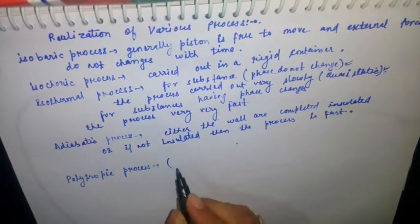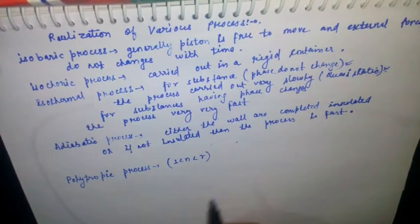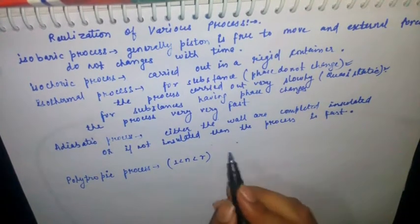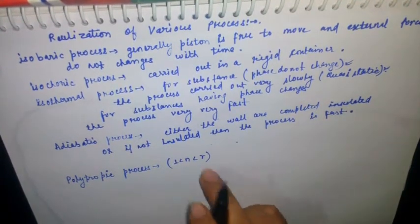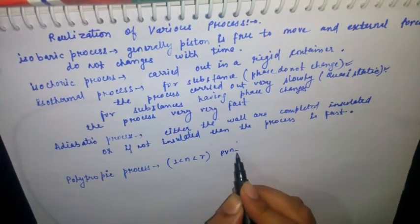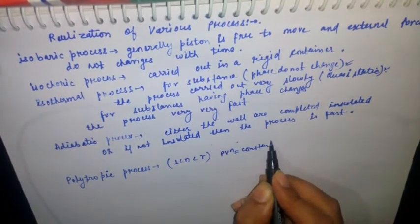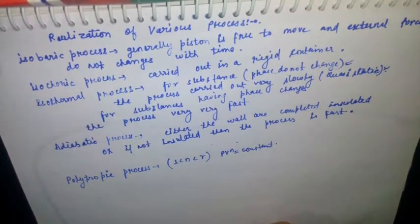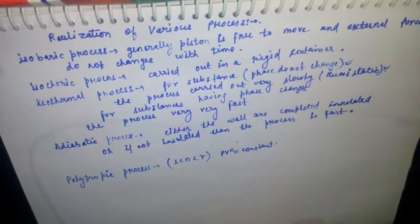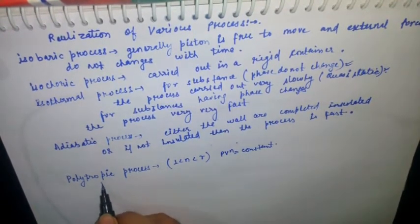For the polytropic process, generally n belongs from 1 to gamma, and the equation is PVⁿ = constant. To determine the polytropic process, even though heat transfer occurs in this process, it is not isothermal.